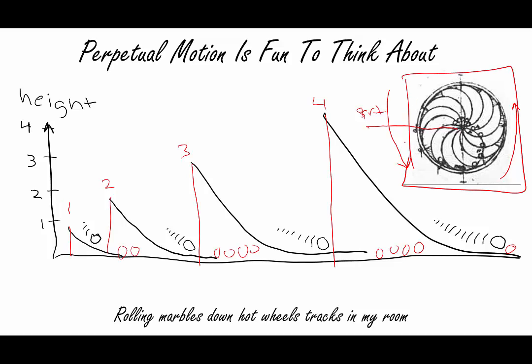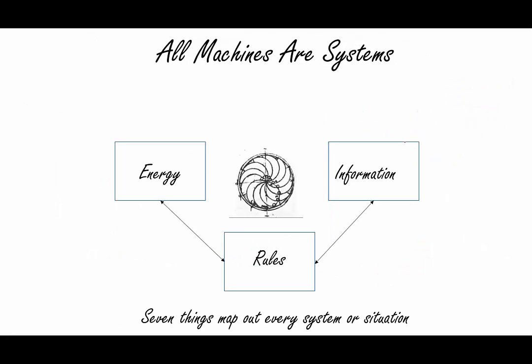Now, all machines operate as systems, and I somehow intuitively could imagine this idea. Based on my models, I knew that all systems are made up of three things, and those things are energy, information, and rules. In order to model this type of system, you need to keep track of seven things.